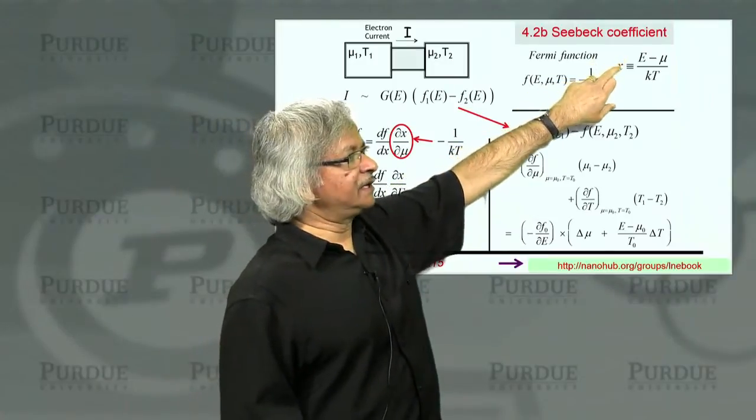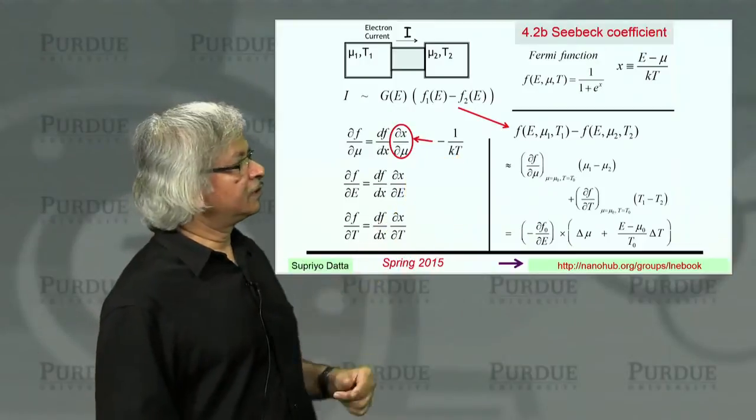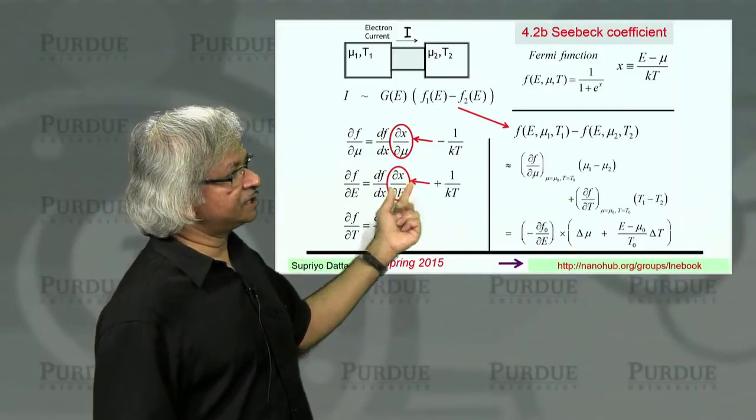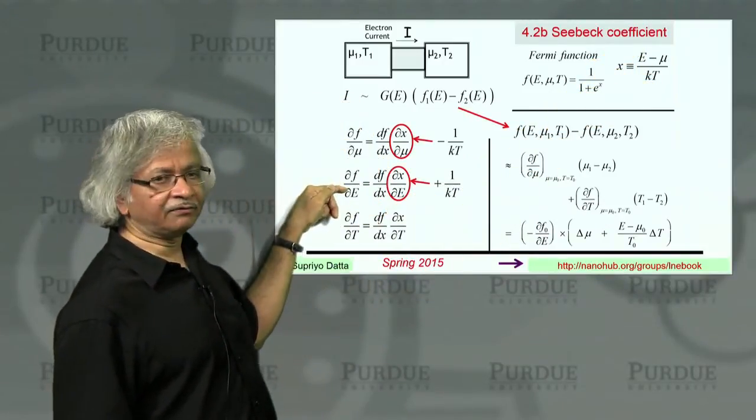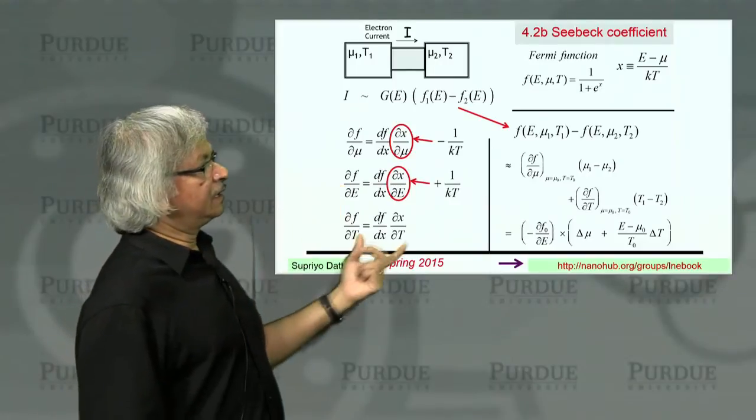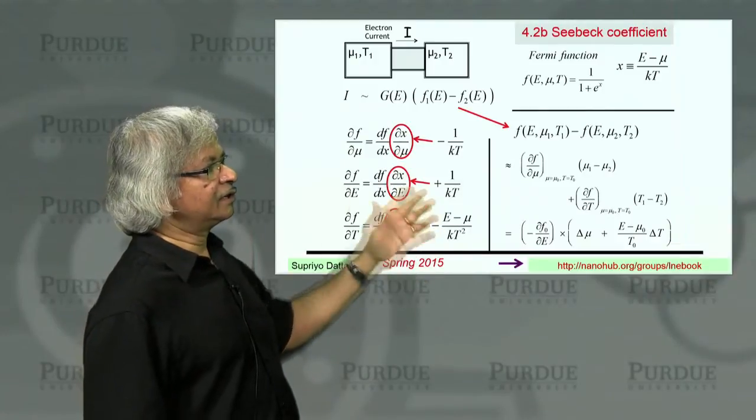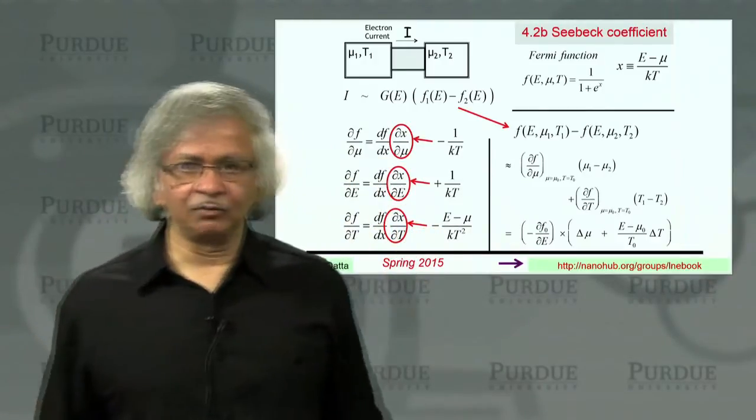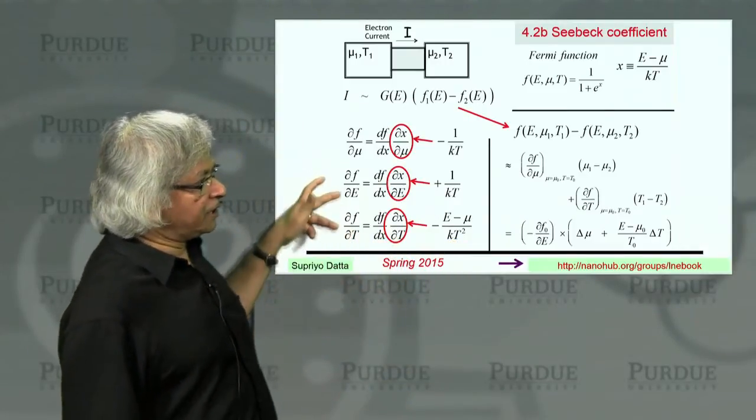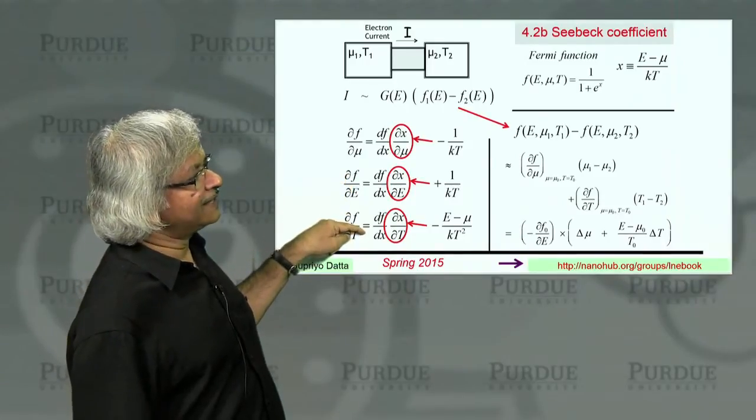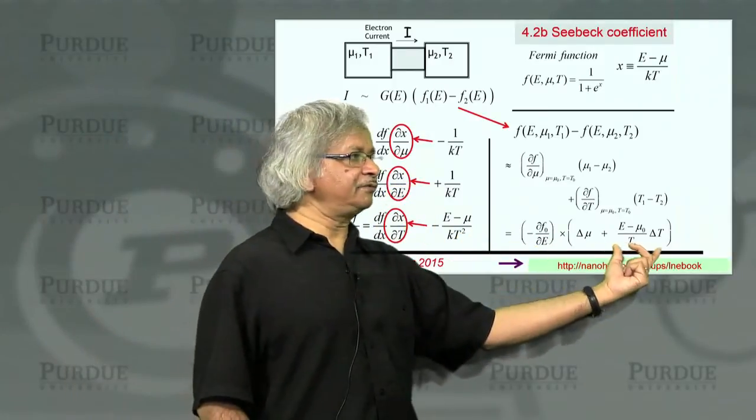If you want derivative with respect to temperature, again, first step is the same, dF dx, but then take derivative of X with respect to temperature. So all these three things then, the first term is the same. They differ only because of the second term. So what is that second term? Well, if you look at X, its derivative with respect to mu is minus 1 over kT. What is the derivative with respect to energy? That's plus 1 over kT. And that's why, of course, this is exactly the negative of that. This one, though, when you take derivative of X with respect to temperature, that's a little more complicated. It's 1 over kT, so derivative is like minus 1 over kT squared.